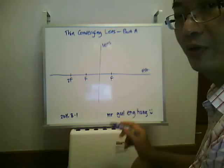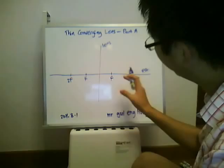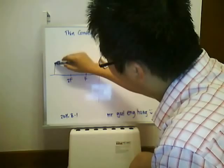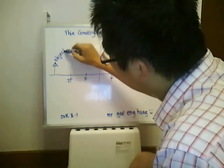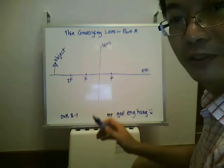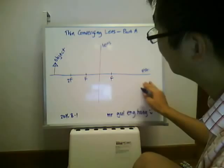Today we're going to learn how the image looks and how to draw the ray diagram if the object is far away. This object can be a tree, a house, or any bright object. The objective is to draw a light ray diagram to find the image — where is the image?